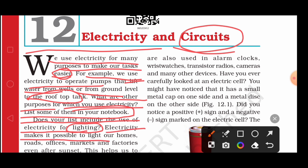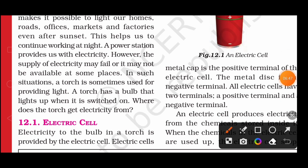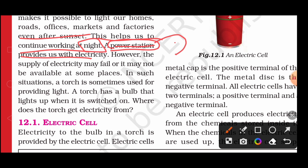Electricity makes it possible to light our homes, roads, and offices — in all places you can see the lights. Even after sunset, this helps us to continue working at night. A power station provides us with electricity — through thermal power plants, hydro power plants, or wind electricity — but we are not going to discuss all these now.